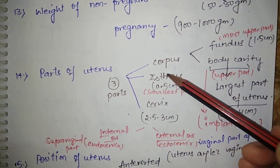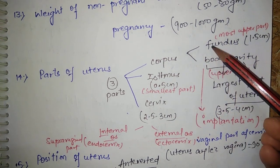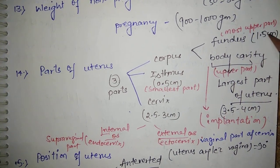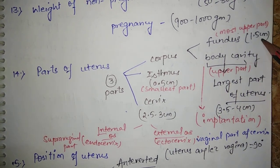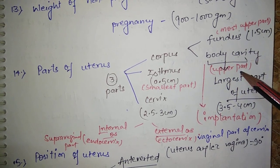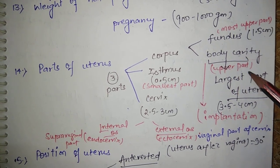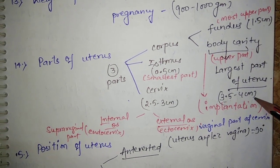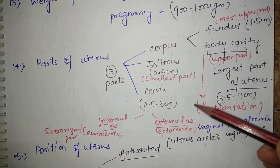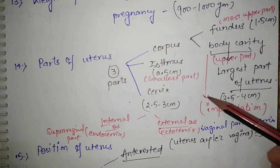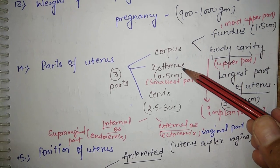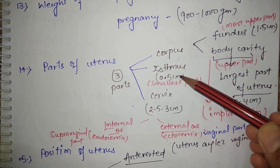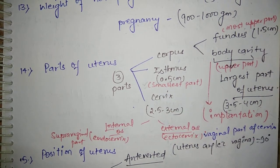The three parts of the uterus are corpus, isthmus, and cervix. Corpus has two parts: fundus and body cavity. Fundus is the uppermost part at 1.5 cm. Body cavity is the largest part, with a length of 3.5 to 4 cm, and implantation takes place in the posterior wall of the body cavity. The isthmus is 0.5 cm and is the smallest part of the uterus.